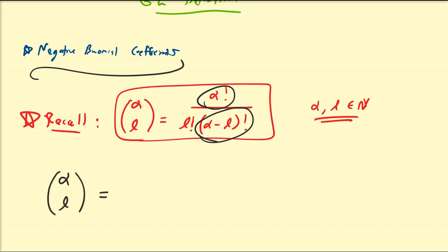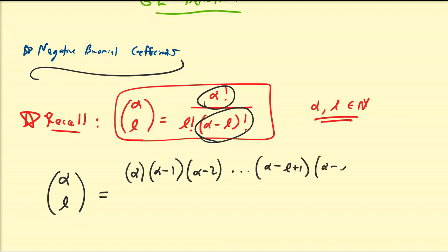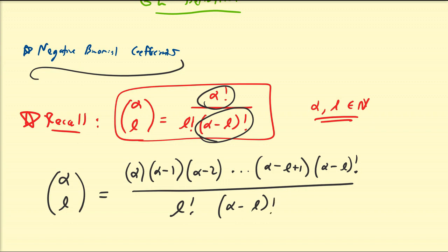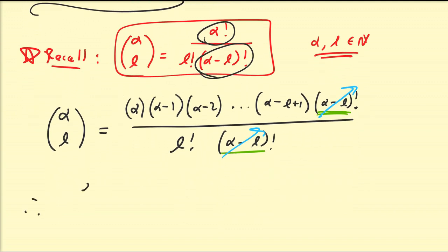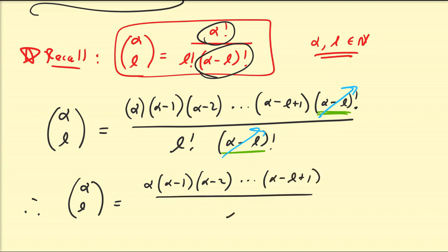So alpha over L is the same as writing alpha times alpha minus one times alpha minus two, all the way down to alpha minus L plus one, times alpha minus L factorial, all over L factorial times alpha minus L factorial. We can expand down to this term because alpha factorial will contain alpha minus L factorial as a factor, so we can cancel the alpha minus L factorial terms. Therefore the binomial coefficient alpha over L equals alpha times alpha minus one times alpha minus two, down to alpha minus L plus one, all divided by L factorial.